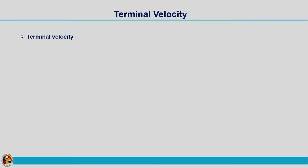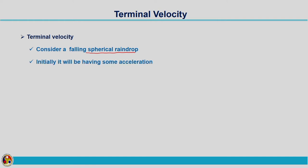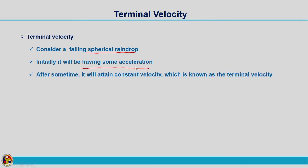What is meant by terminal velocity? Consider a spherical raindrop — actually these raindrops will not be spherical; it is our assumption that they are spherical in shape. Initially it will be having some acceleration. After that, it will attain a constant velocity, and that constant velocity with which the raindrop is falling onto the ground from the atmosphere is termed as terminal velocity.